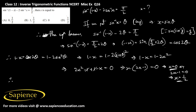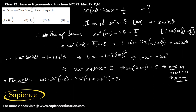For x equal to 0, the left hand side will be sine inverse of (1 minus 0) minus 2 sine inverse 0, which equals sine inverse 1 minus 0, which is pi by 2. This equals the right hand side, so x equal to 0 satisfies the given equation.